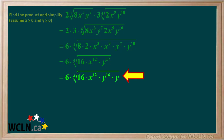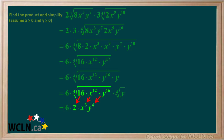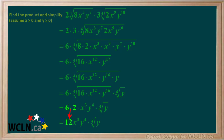We'll separate the single fourth root radical into the fourth root of 16x to the 12th y to the 16th, times the fourth root of y. The fourth root of 16 is 2, the fourth root of x to the 12th is x cubed, and the fourth root of y to the 16th is y to the fourth. The fourth root of y cannot be simplified, so we just write it down as is. 6 times 2 equals 12, so this is the final answer.